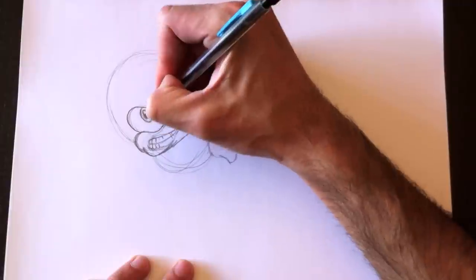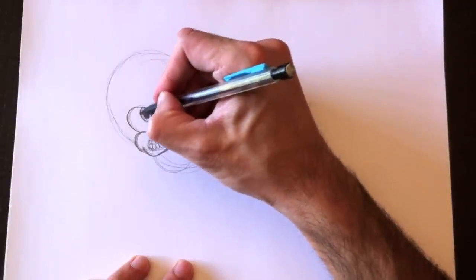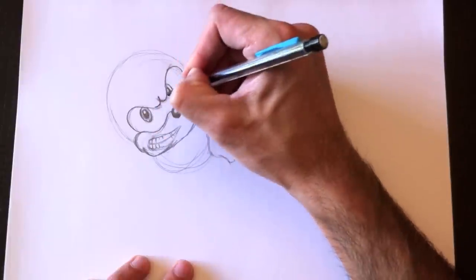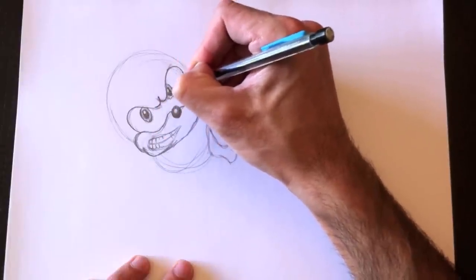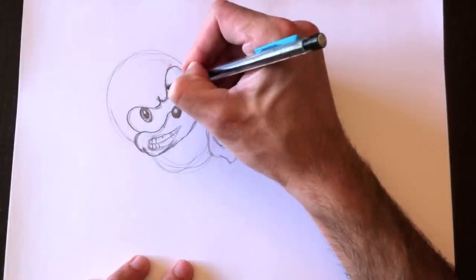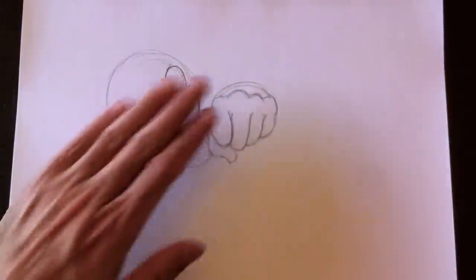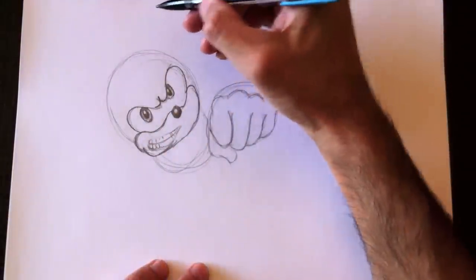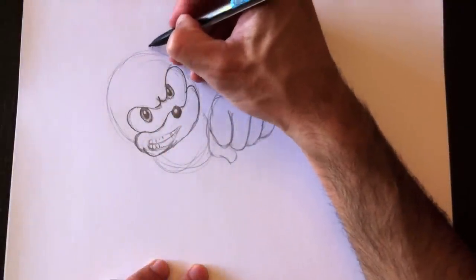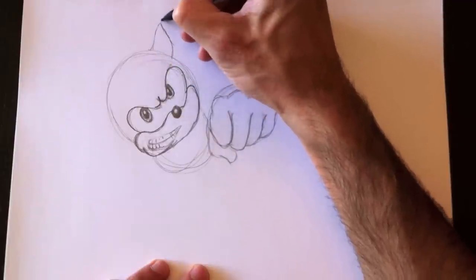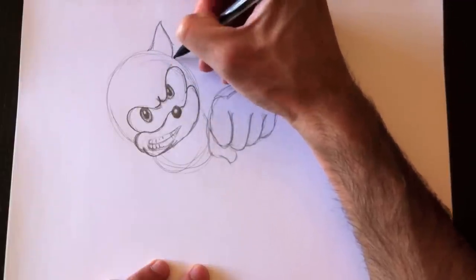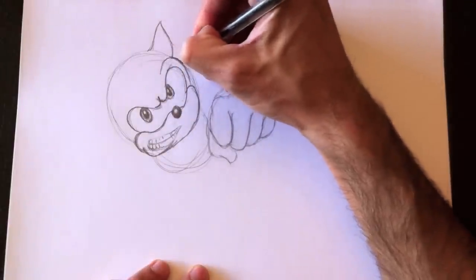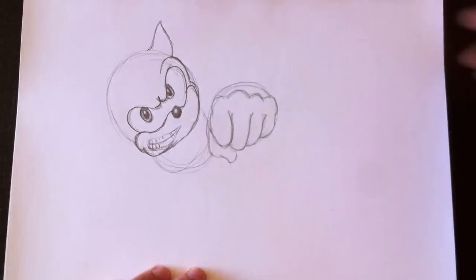Here are the completed eyes on Sonic the Hedgehog. Our Sonic sort of looks angry today. Sonic must have all kinds of emotions, sort of like us, so he's a little angry today. You can make yours happy if you like - it's your drawing, you do what you want with it.